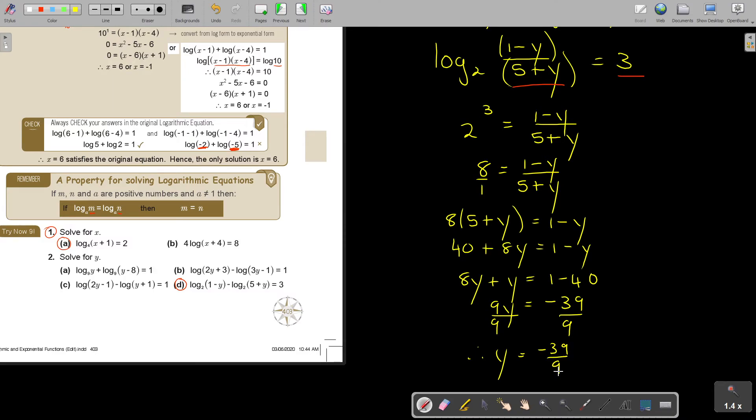So, I'm going to get 9y equals negative 39. I divide 9. I divide 9. So, therefore, y is equal. I can either leave it or I can do 39 over 9. Oh, but this can simplify.